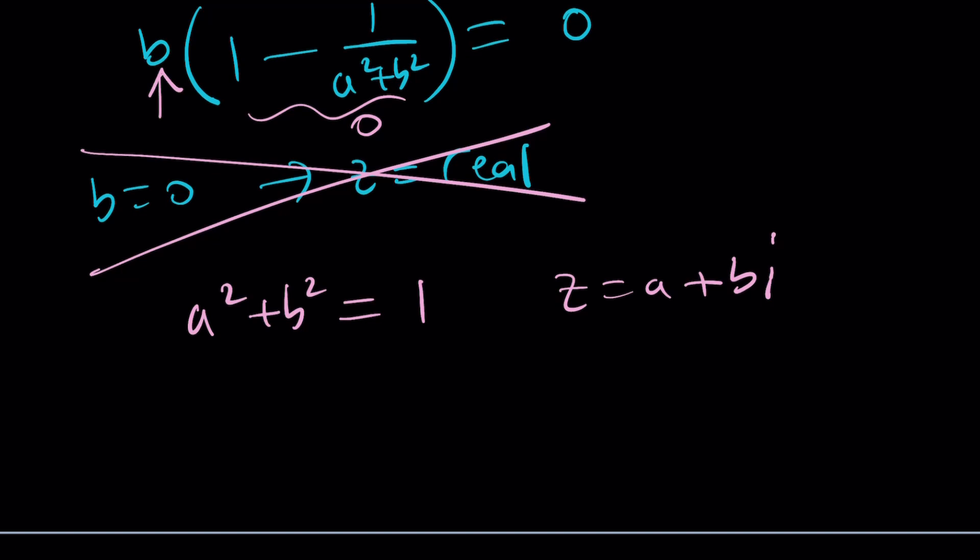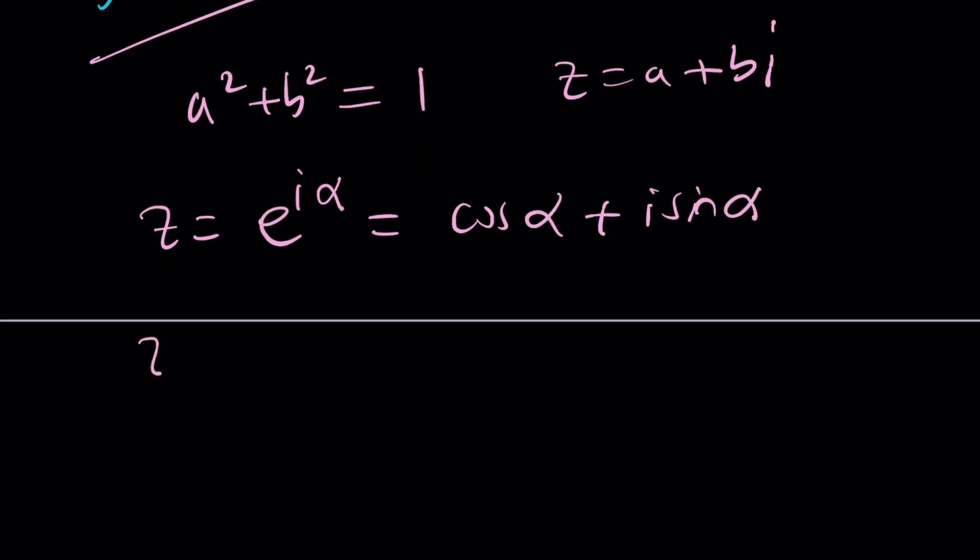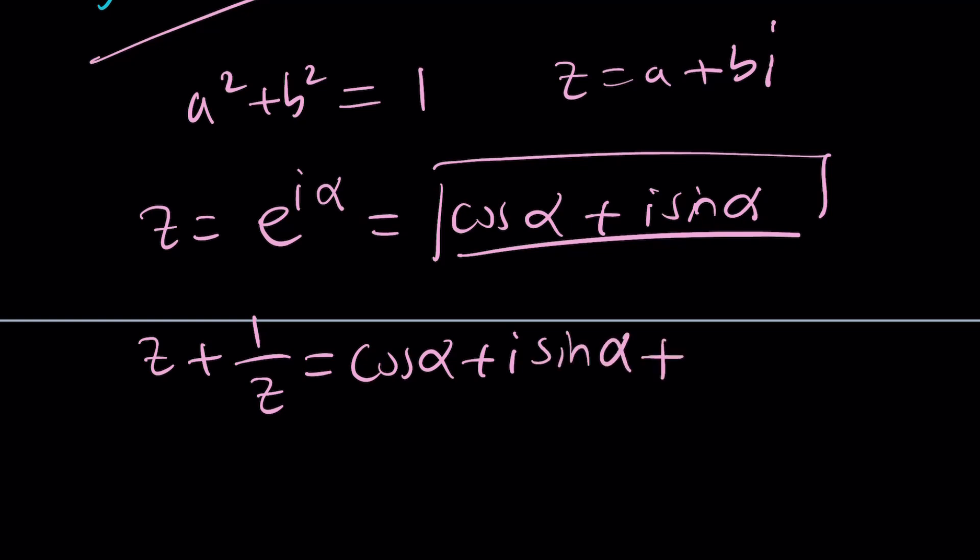What does that mean though? Well, it just means that z can be written as e to the power i theta or i alpha. Actually, I can't use theta because I don't know what it is. But I can write it as follows: cosine alpha plus i sine alpha. Let's do z plus one over z. Now, if z is this, then it's going to be cosine alpha plus i sine alpha. And now one over z is just going to be the reciprocal. But in this case, it's also going to be the conjugate. Cosine alpha minus i sine alpha.